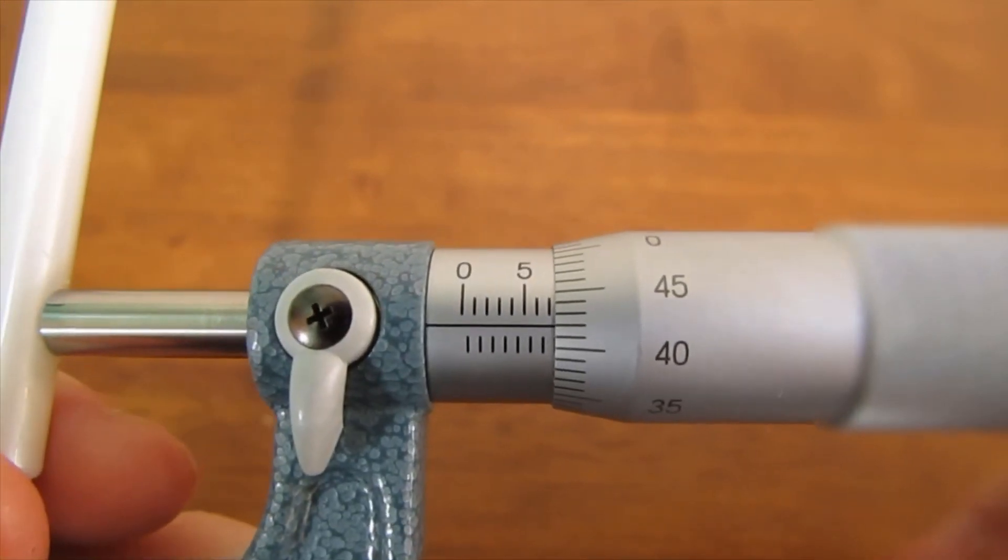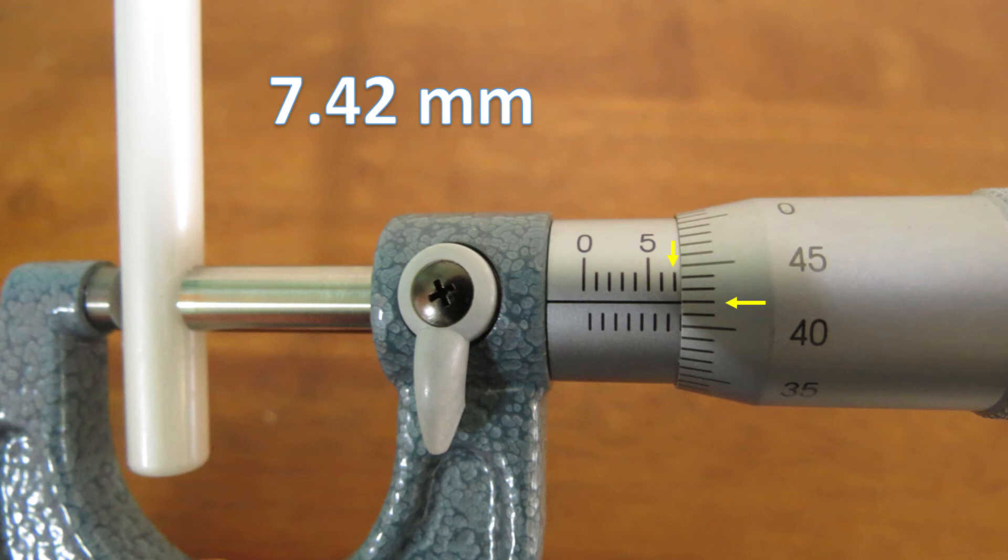Here, the diameter of the pen is 7 plus 0.42 millimeters.